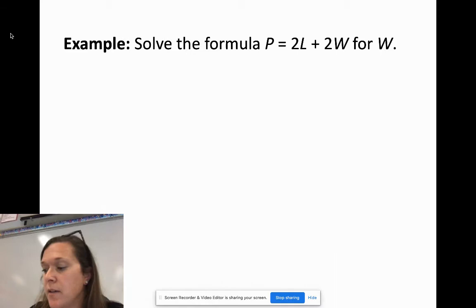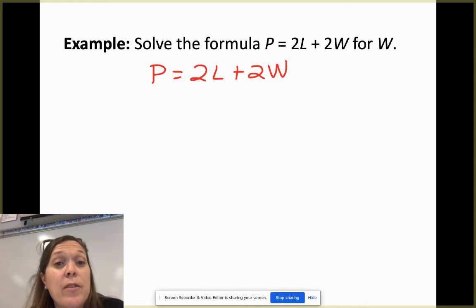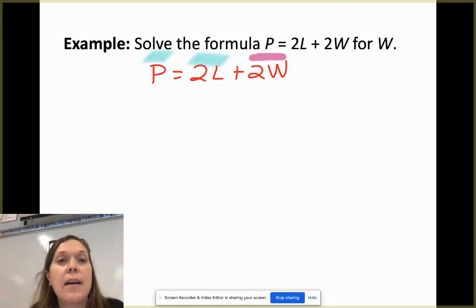Here's our first formula. Can anybody guess what that formula stands for? P equals 2L plus 2W. That is the perimeter of a rectangle, if you didn't know that. But what we really care about is that we're trying to solve this equation for W. So notice right here is my term that has a W in it. This does not have a W and that does not have a W.